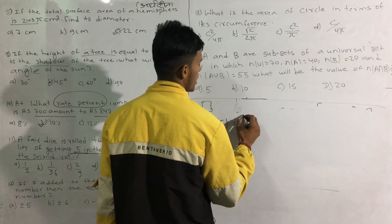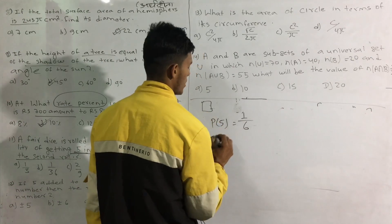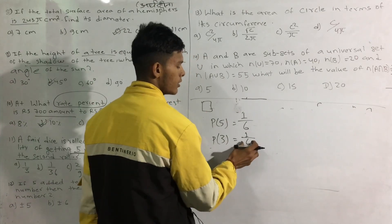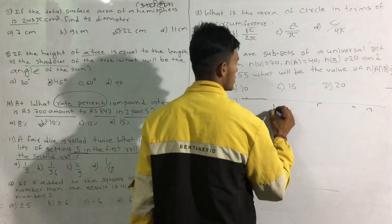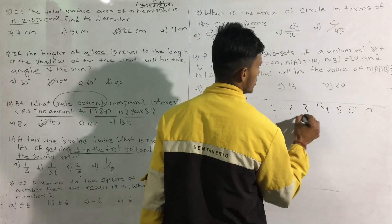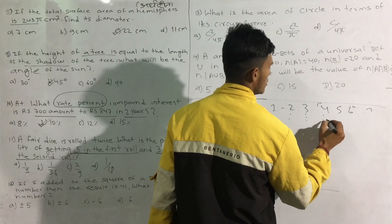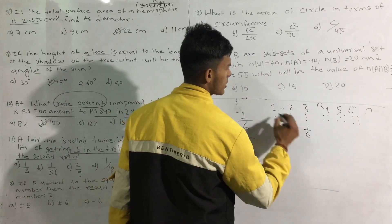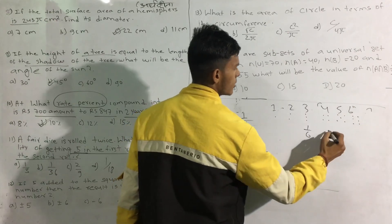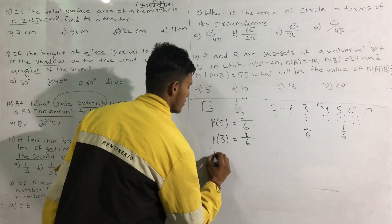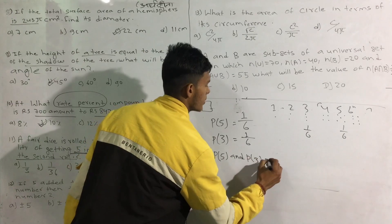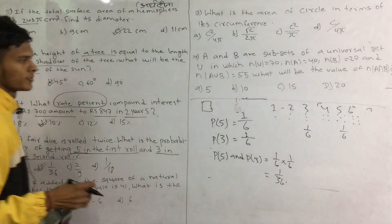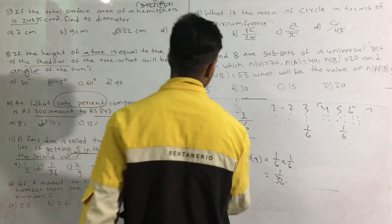We have to get 3 and 5, and multiply by the probability of 5. The probability of 5 is equal to 1/6. The probability of 3 is equal to 1/6. The total outcomes of the dice is equal to 6. So the answer is 1/6 × 1/6 = 1/36.